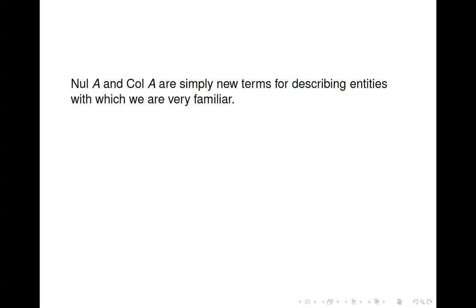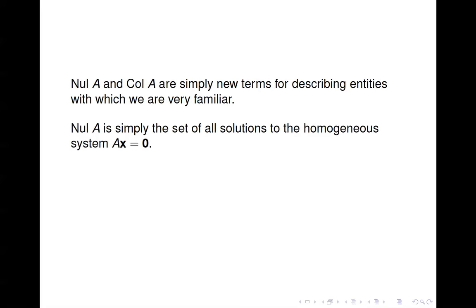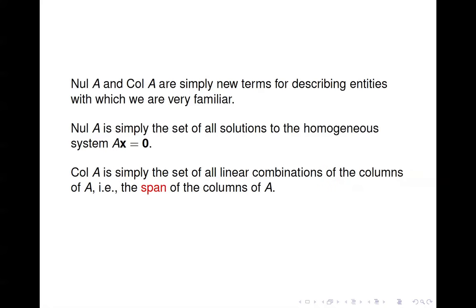The null space of A and the column space of A are simply new terms for describing entities with which we are already familiar. Null(A) is just the set of all solutions to Ax = 0, which dates back to sections 1.3 and 1.4. The column space of A is just the set of all linear combinations of the columns, or the span of the columns — going back to fundamental information from chapter 1.